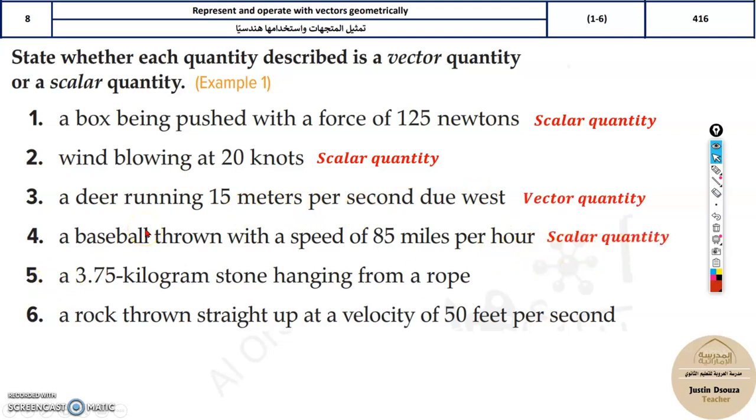We have a 3.75 kilogram stone hanging from a rope. If you might remember, the weight will be a vector quantity. You can say this is a weight, so this will be a vector.